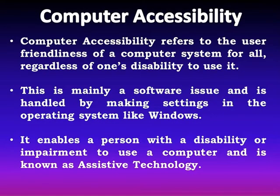The first term we need to understand in this chapter is what is computer accessibility. Computer accessibility is the user-friendliness of a computer system for everyone. A person can have some form of disability which makes them unable to use a computer system normally. This is basically a software issue and can be dealt with by making certain settings in the operating system like Windows. These accessibility options, also called assistive technology, enable a person with disability or impairment to use a computer system normally.